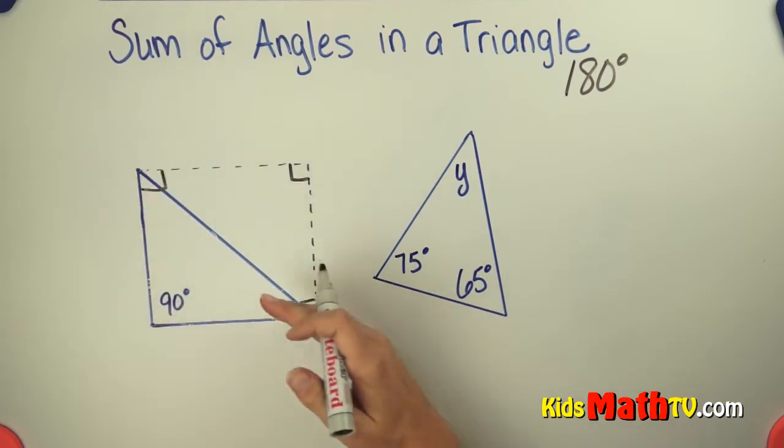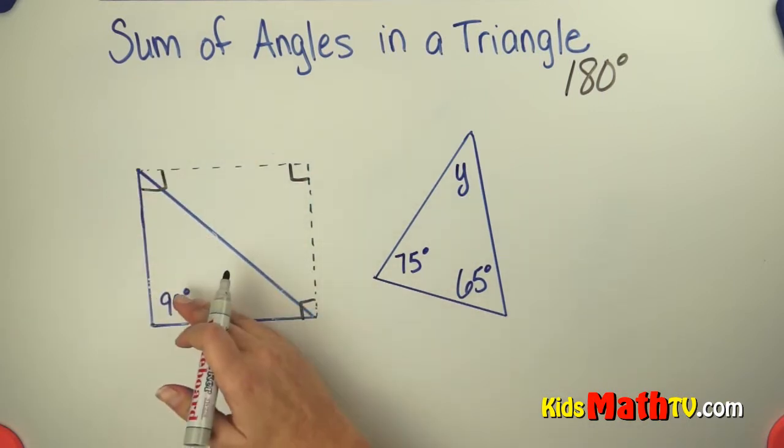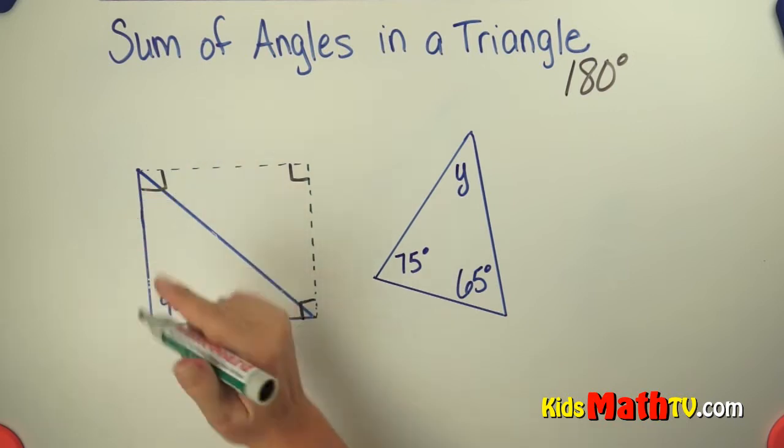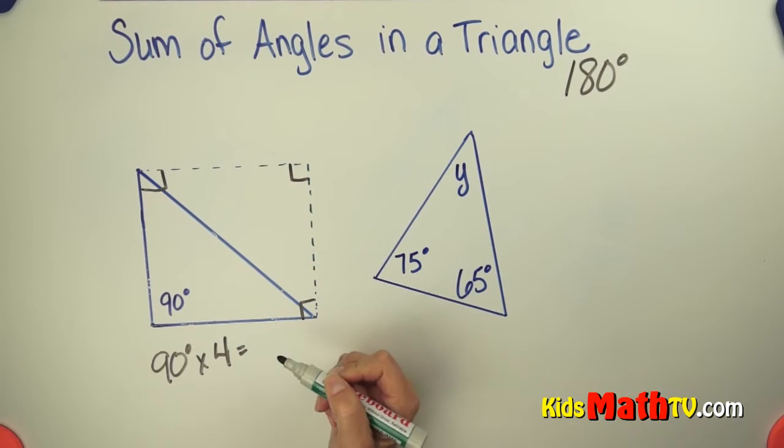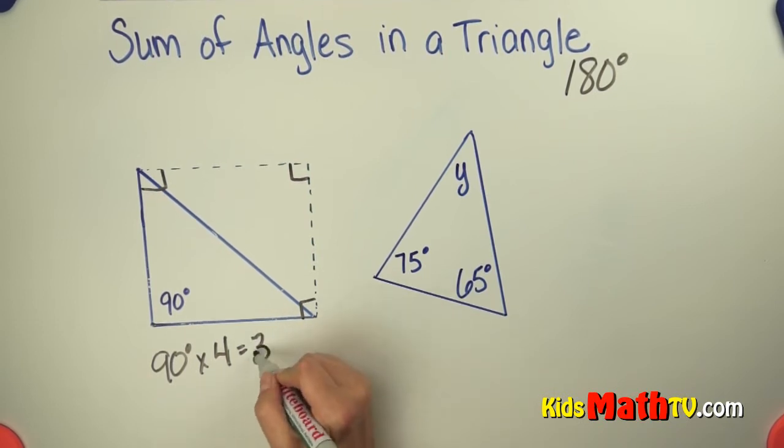If we cut that in half, it's a triangle. So 90 degrees, 90 times 4 angles is 360 degrees.